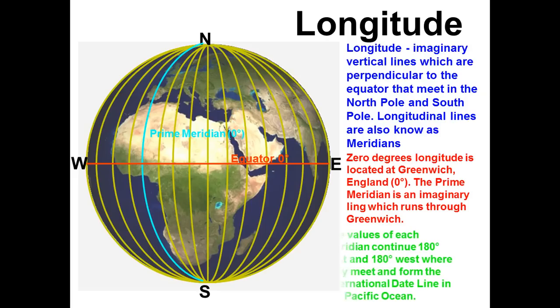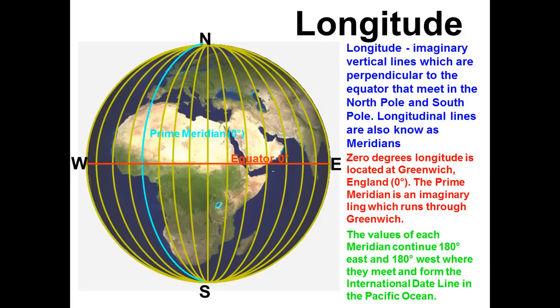Between the zero degree point and the extreme east and the extreme west, we also put in degree points as well. So, here we have 10 degrees west, 20 degrees west, 30 degrees west. There's more degree lines, but I can't put them in because the Earth's surface curves away at that point.